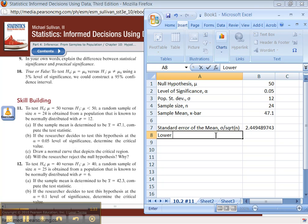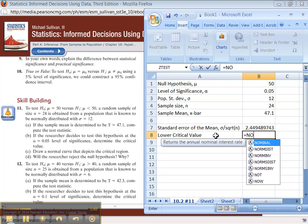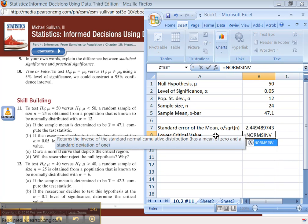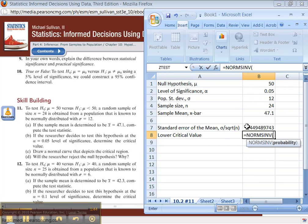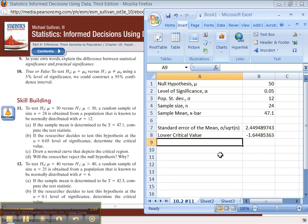Next, I need the critical value, which we first learned how to find in chapter 7. The critical value is NORM.S.INV of alpha. It's only alpha because it's a left-tailed test.